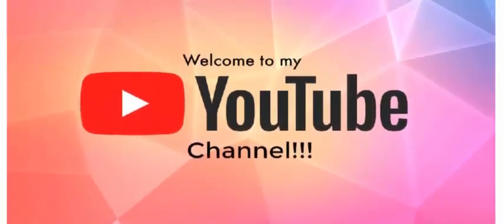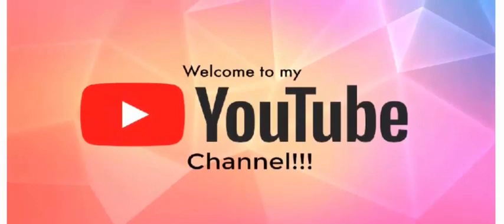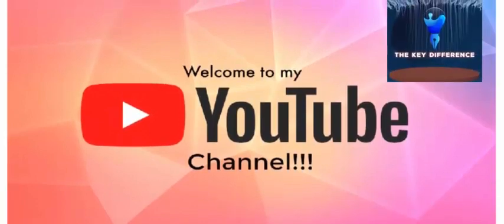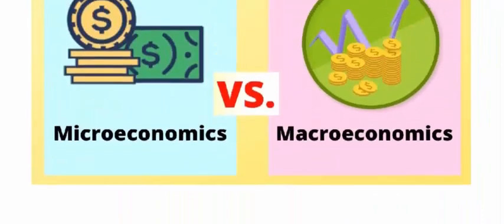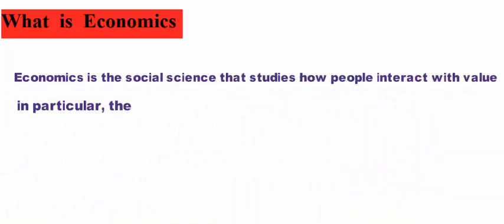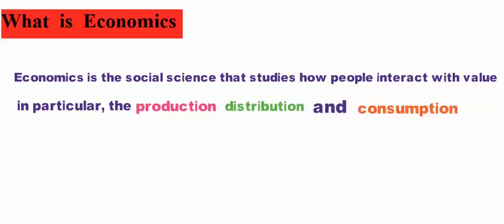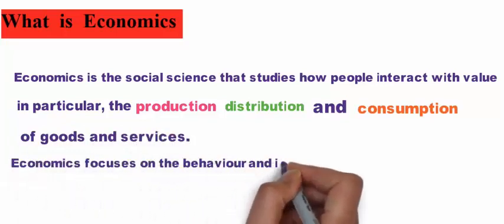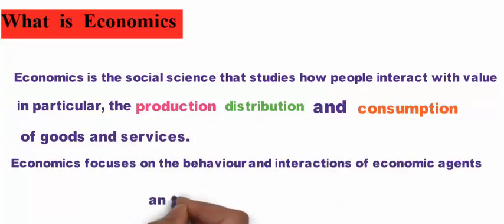Hi, I'm Ayesha. Welcome to my channel, you are watching The Difference Key. In this video we discuss about micro and macroeconomics. Economics is the social science that studies how people interact with value — in particular the production, distribution, and consumption of goods and services. Economics focuses on the behavior and interactions of economic agents and how economies work.